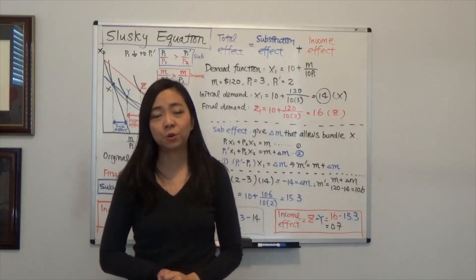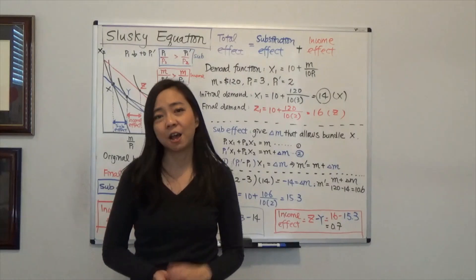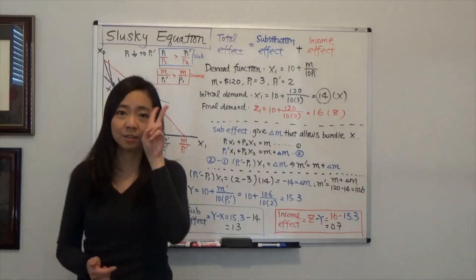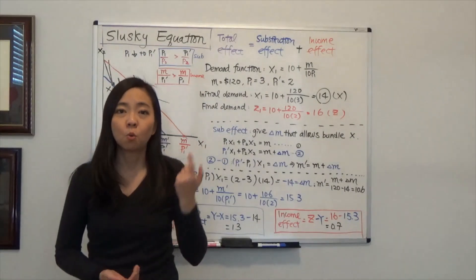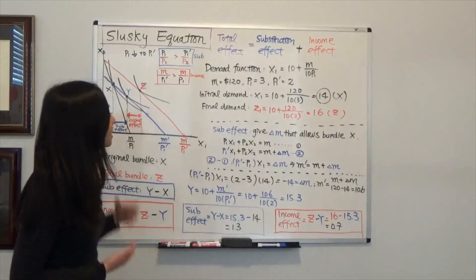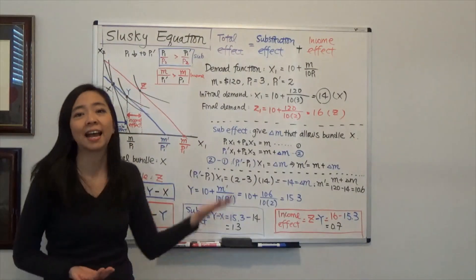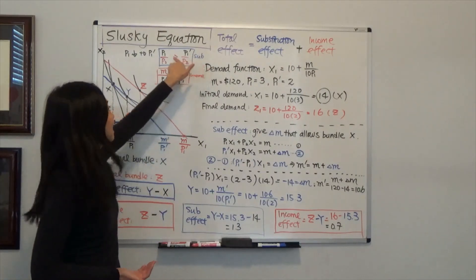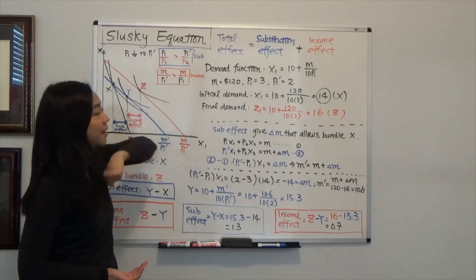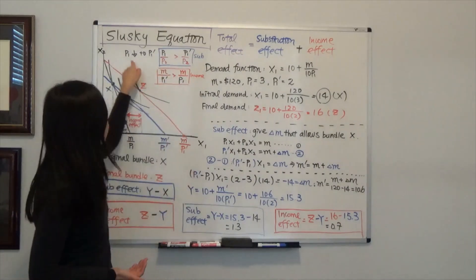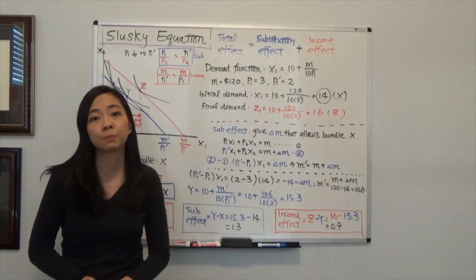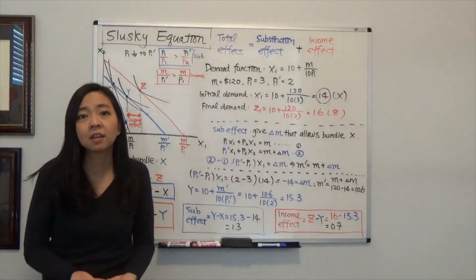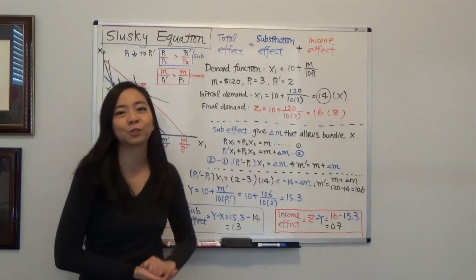Suppose we are in a world of two goods and we have one budget. Now suppose the price of good one has gone down from P1 to P1 prime. Then two things are happening. The first one is a substitution effect, meaning the relative price of good one has gone down. Mathematically, that means P1 prime over P2 is lower than P1 over P2. That means good one has become relatively cheaper than good two, and therefore you should buy more good one to replace good two. We call that the substitution effect.